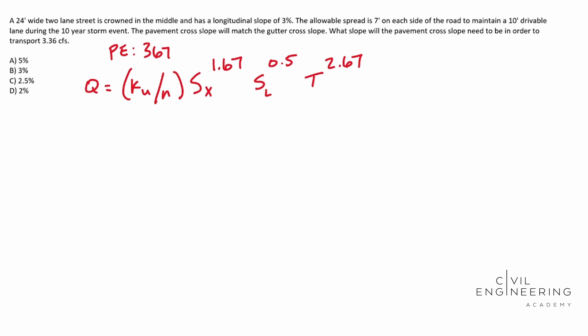So we have a lot that we can go off of here. We know our flow rate, which is 3.36. So let's go ahead and plug that in, 3.36 cubic feet per second.